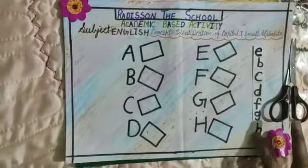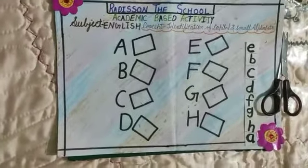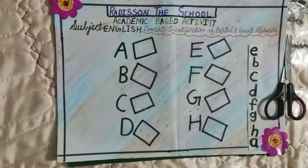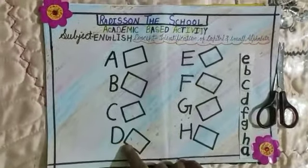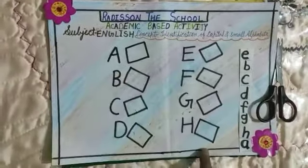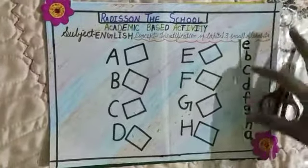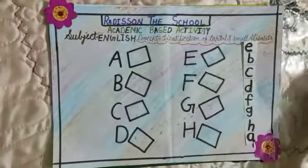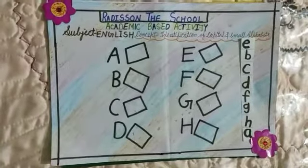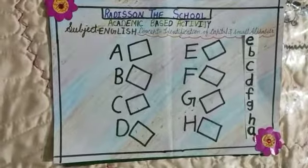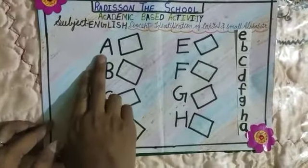First of all, take a paper and write alphabets capital E to H. We have seen capital alphabets from A to H. Then take a strip and take small alphabets — you have to write those as well.